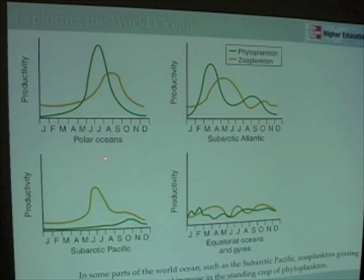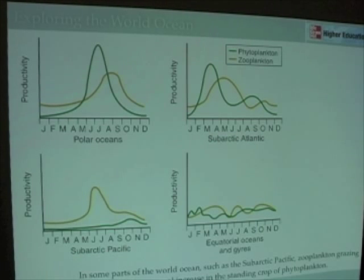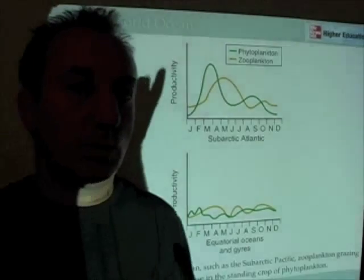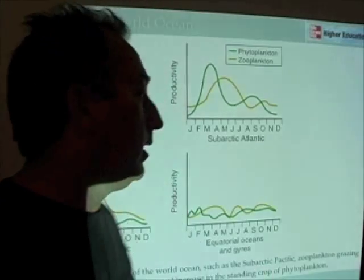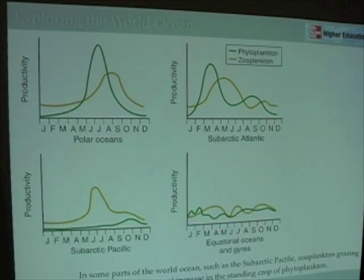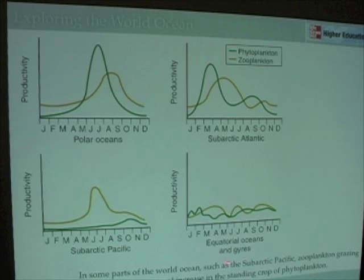Here we have the polar oceans, here we have the subarctic Atlantic, and the subarctic Pacific — regions that we live in. And here we have the equatorial ocean, also the central regions of the oceans, what are known as the gyres, a topic we'll get into when we talk in chapter 9 about ocean circulation.